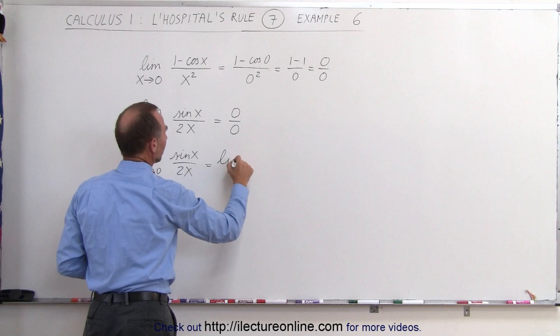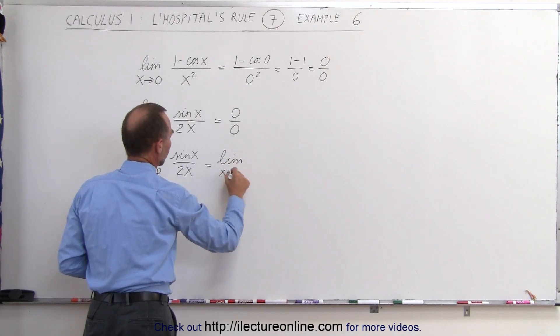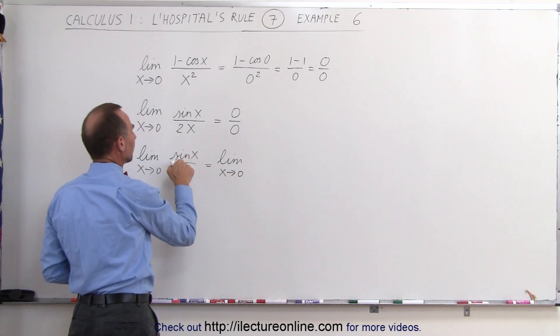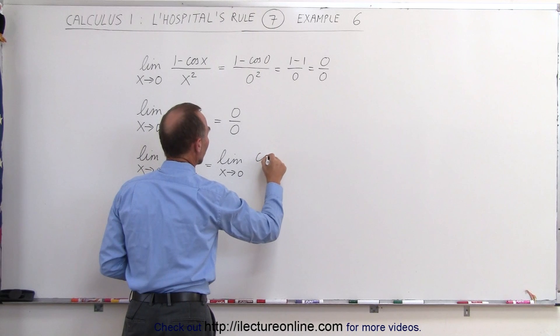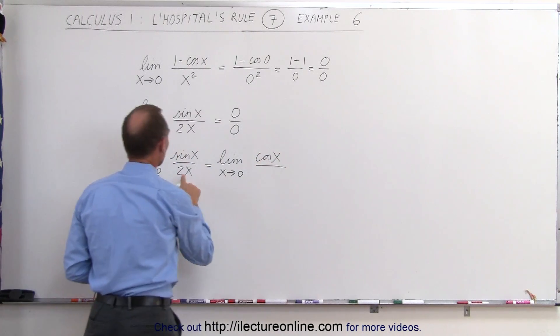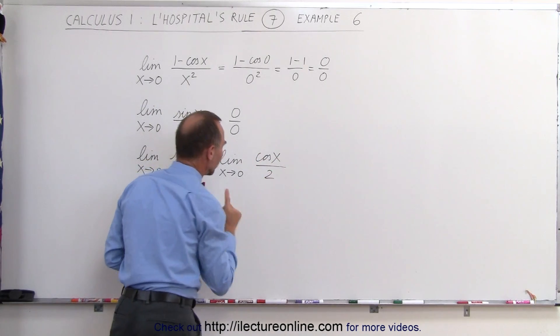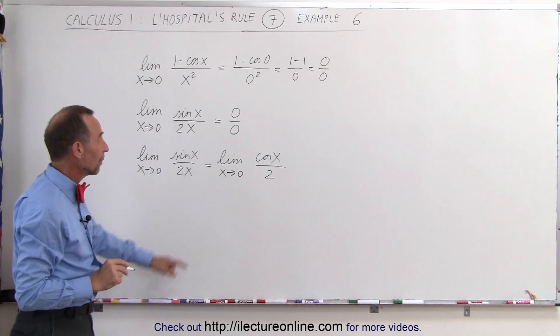This is equal to the limit as x approaches 0 of the derivative of the numerator, which is the cosine of x, divided by the derivative of the denominator, which is 2. Now let's plug in the limit and see what we get.